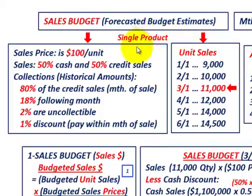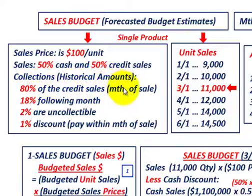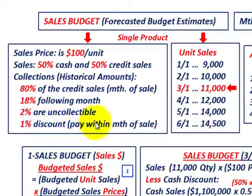For our sales budget, we need to know our sales price on a per unit basis — in this case $100. Our sales are estimated, based on historical amounts, at 50% cash and 50% credit sales. For collections: 80% of credit sales are collected in the month of sale, 18% in the following month, and 2% are uncollectable. We also give a 1% cash discount if they pay within the first month of the sale.